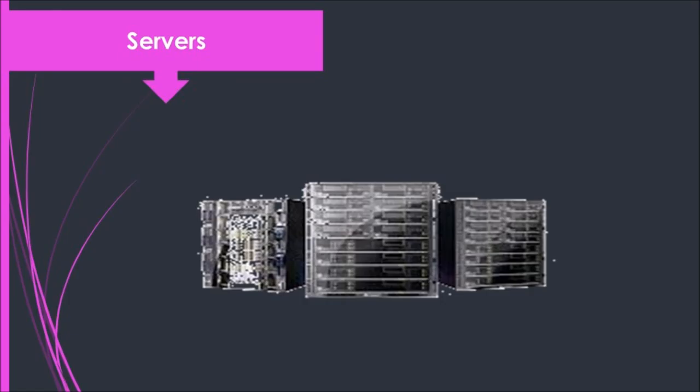You have organizations that would have a file server, which is used to store and manage files. A print server, which manages printers and print jobs in an organization. There can also be a database server, which stores and provides access to a database — a bank of data — or a network server, which manages network traffic and activities to ensure that the network stays productive.